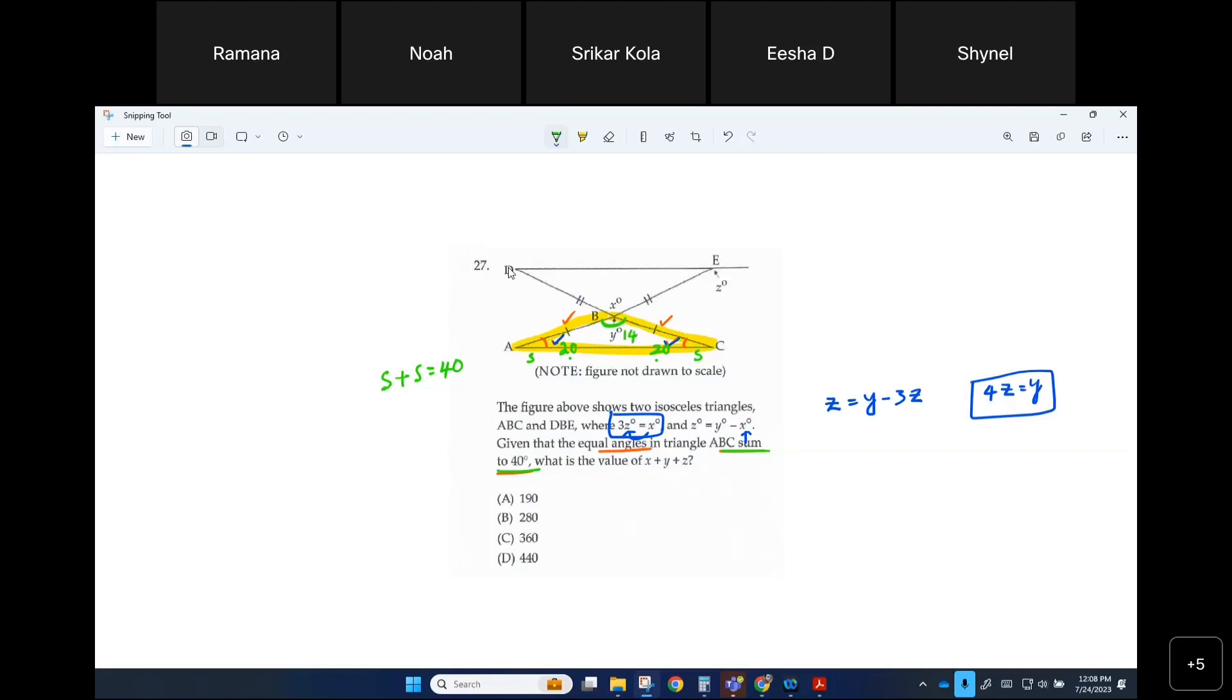Exactly, so y is 140, correct? Yeah. If y is 140, can you figure out z? Yeah, what is z? z would be 140 divided by 4, which is, use calculator, it would be 35. Okay, z is 35.